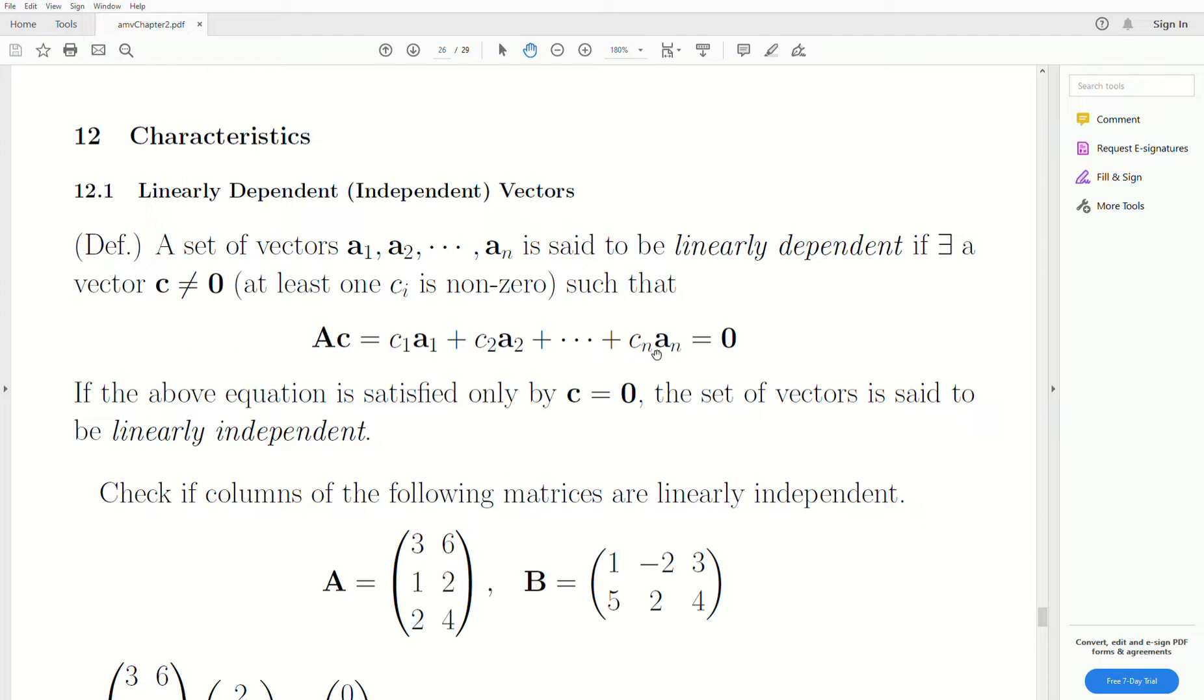So that's saying that we can take a linear combination of the vectors, and not all the C's are zero, and it equals zero. Then they're linearly dependent. Now, if the only solution here is that when all the C's are zero, which is what this says, the vector C is the vector zero, then they're linearly independent.